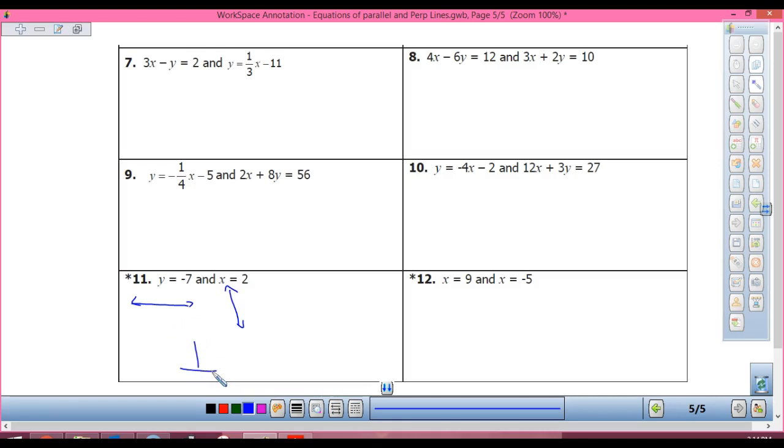Okay, in number twelve, x equals nine is what kind of line? Vertical. X equals negative five is vertical. What kind of lines do I have? Parallel. The biggest thing is going to be getting the y by itself so that you can pull out the slope. Alright, so you can do it.